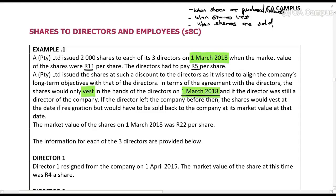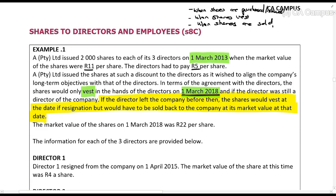When the shares vest is when you get taxed on them. If the director was still a director of the company at that date, the shares vest on the 1st of March 2018. If the director left the company before then, the shares would vest at the date of resignation, but would have to be sold back to the company at its market value at that date. So there are two vesting periods: 1 March 2018, or the date of resignation.